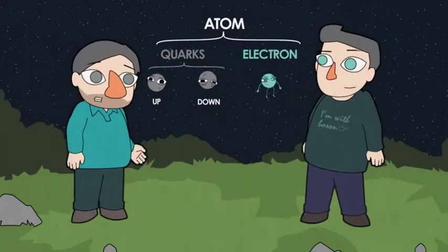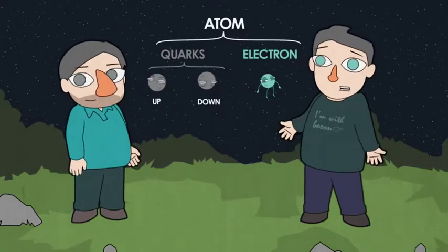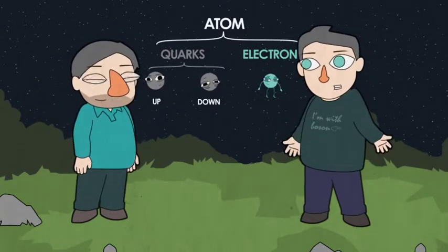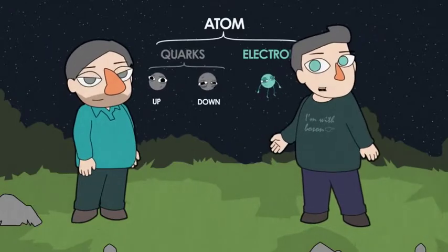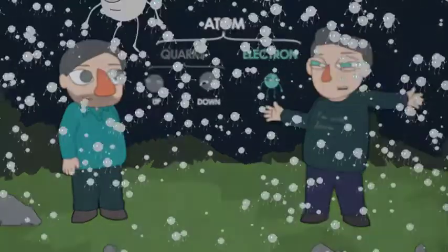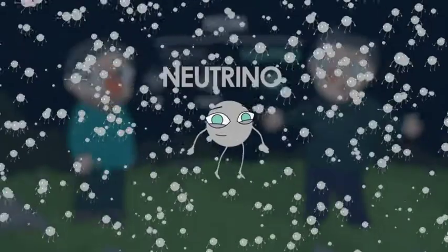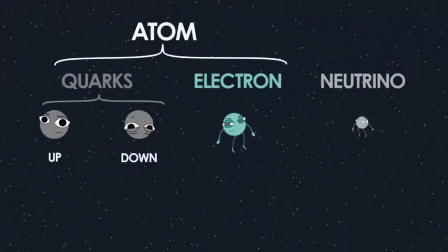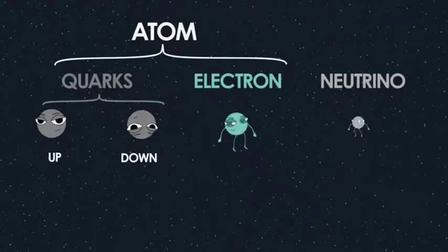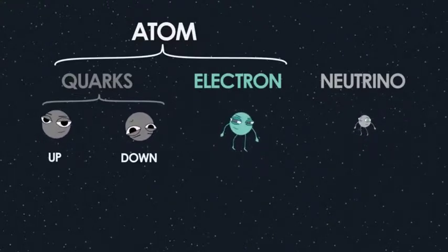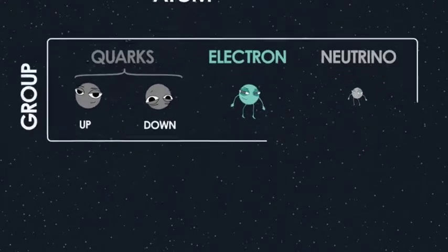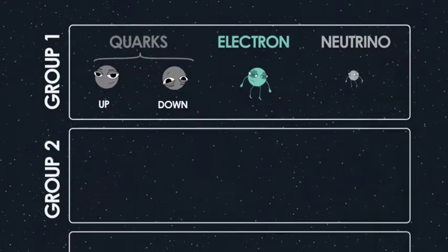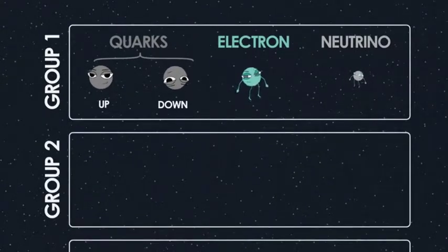Almost everything in the universe is made of those things — two quarks and the electron. But there are other fundamental particles too; there are trillions of neutrinos passing through us right now. So we've got the up and down quark, electrons, and neutrinos — is that it? No, not even close. It turns out there are a lot more fundamental particles than that — actually two more groups of four particles, just like our group of four but heavier.